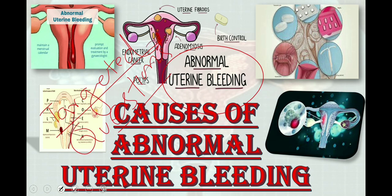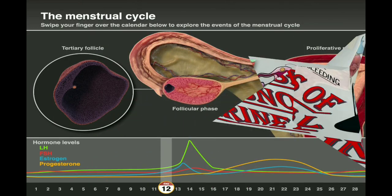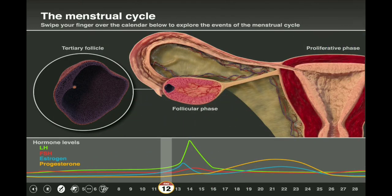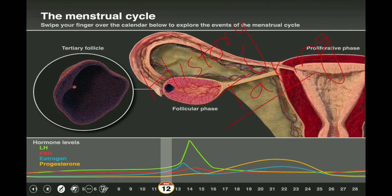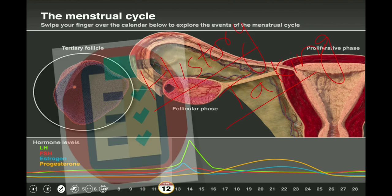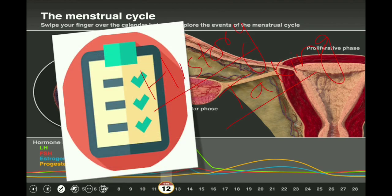When a patient presents with abnormal uterine bleeding, initially you will ask about all the demographic profile as we do in every history taking, and also ask an open-ended question in which the patient will explain her problem in her own words. Then we should ask questions related to the menstrual history and related to the symptoms of abnormal uterine bleeding.